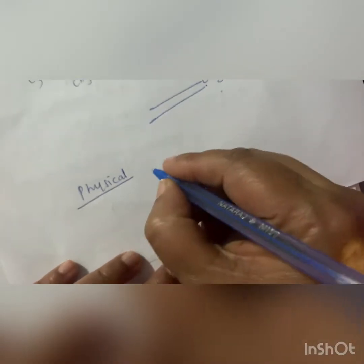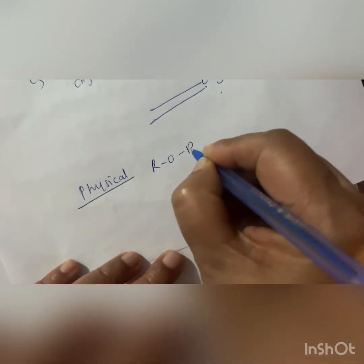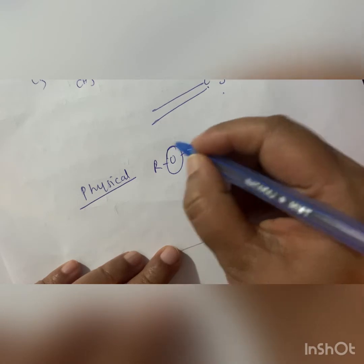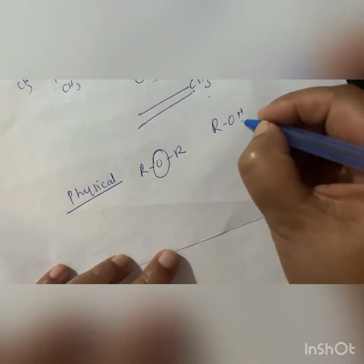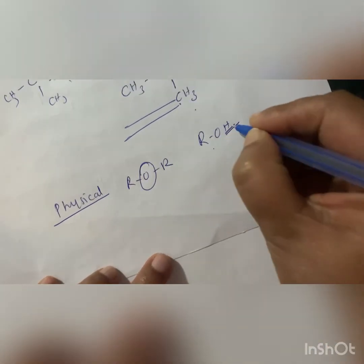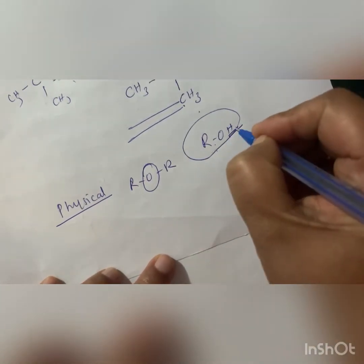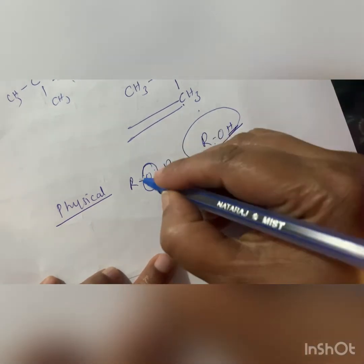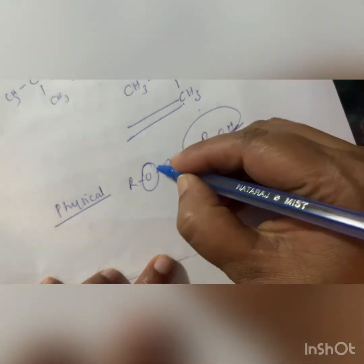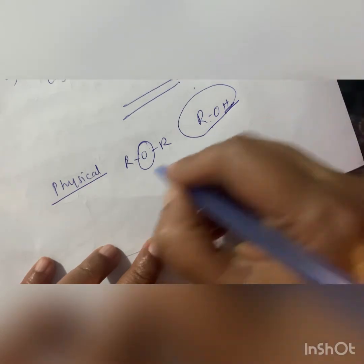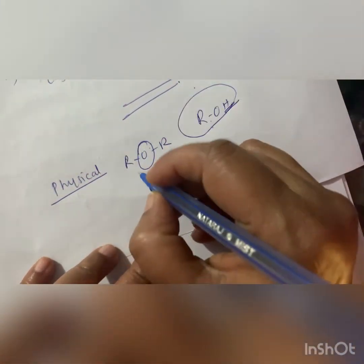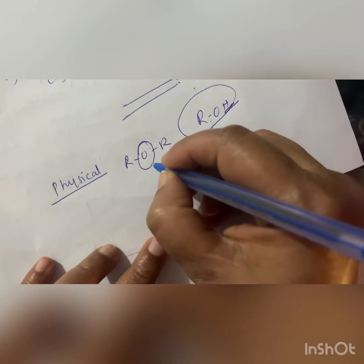Ether (ROR) does not have any hydrogen bonded to oxygen, so ether molecules cannot form hydrogen bonds with each other. In contrast, alcohol (ROH) has hydrogen bonded to oxygen, so hydrogen bonding is possible for alcohols. Because ether cannot form intermolecular hydrogen bonds, its boiling point is very much less than that of the corresponding alcohol — nearly 100°C difference.